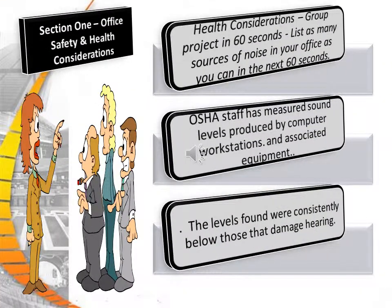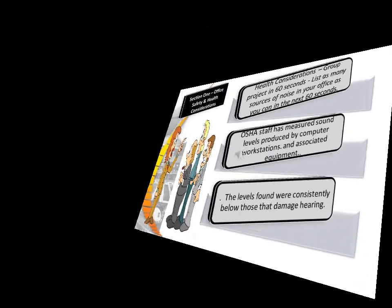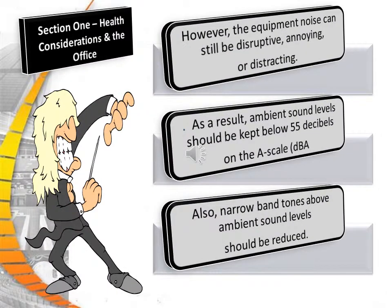Here's your first group project: in 60 seconds, list as many sources of noise in your office as you can. Remember, equipment noise can be disruptive, annoying, or distracting. As a result, ambient sound levels should be kept as close to 55 decibels as possible on the A scale.